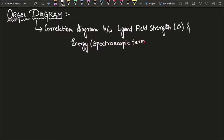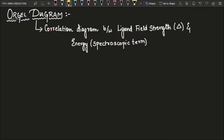This Orgel diagram is a qualitative diagram, so we cannot find out the exact value of energy for each field strength. Instead, using this Orgel diagram we can find out the number of spin-allowed transitions — the number of transitions that are possible for a spectroscopic term. In exams, questions are asked from this part: they ask you to find out the number of spin-allowed transitions for any spectroscopic term.